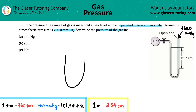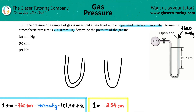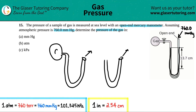Here's a guideline for open-ended manometers. Picture a U-shape — one side is open to the environment (the right side), and the other side is hooked up to the gas (G for gas).